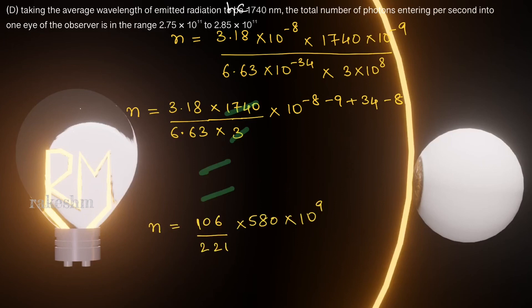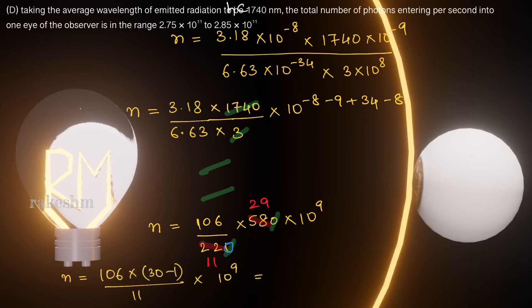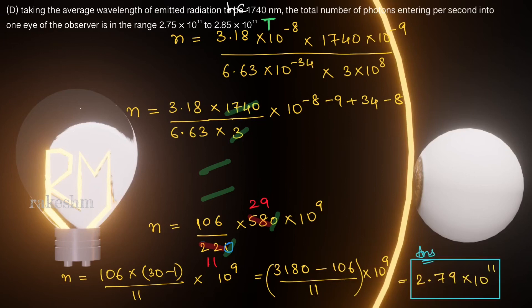Cancelling 3 with 1740 gives 580; simplifying 318/663 → 106/221. Approximating 221 ≈ 220 to cancel zeros, we get 106/(11 × 29) × 10⁹. Writing 29 as 30 − 1: (106 × 30 − 106) / 11 = (3180 − 106)/11 × 10⁹ = 2.79 × 10¹¹. This value falls within the given range, so the fourth statement is true. Statements 2, 3, and 4 are correct. See you in the next video.